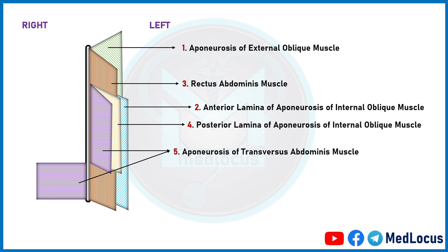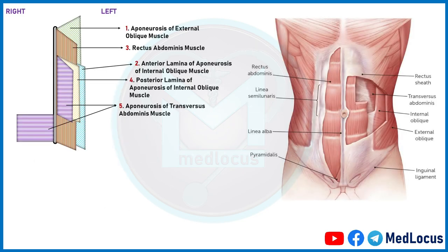The aponeurosis of the internal oblique muscle in the middle is divided into anterior and posterior lamina. You can compare the arrangement of muscles from this picture too.